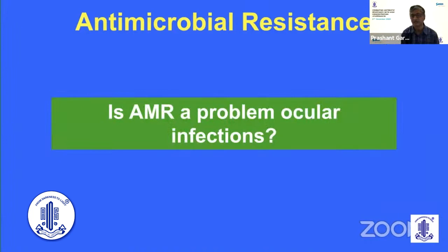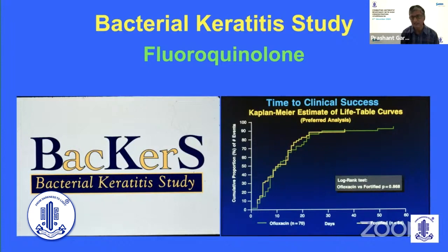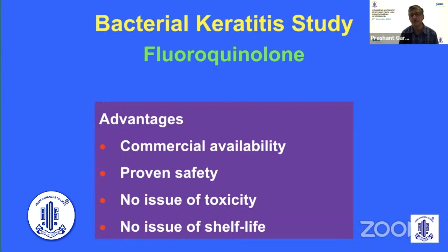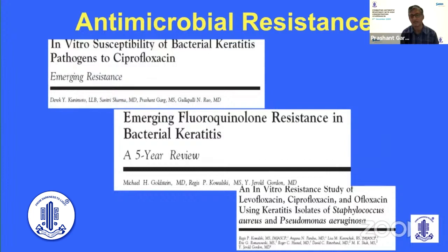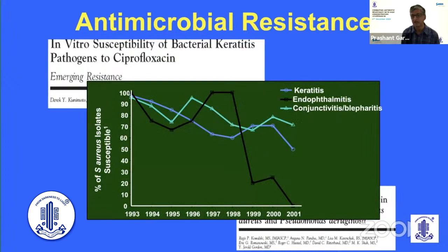Is AMR a problem in ocular infections? In the 1980s, the bacterial keratitis study comparing fluoroquinolone monotherapy with a combination of fortified cefazolin and tobramycin showed monotherapy was as effective as combination therapy. It was thought that fluoroquinolones develop resistance through genetic mutations, and therefore people believed we would not see resistance phenomena with fluoroquinolones. However, in 1999, a report showed progressive increase of ciprofloxacin resistance in Pseudomonas aeruginosa, and subsequently many investigators published reports of emerging fluoroquinolone resistance in bacterial keratitis, endophthalmitis, conjunctivitis, and blepharitis.